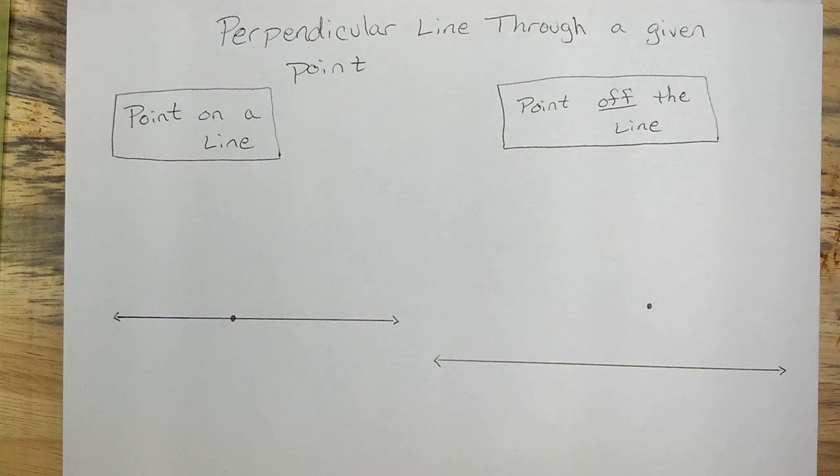To create a perpendicular line through a given point, you have two situations. One, the point is either on the line, or two, the point is off the line.